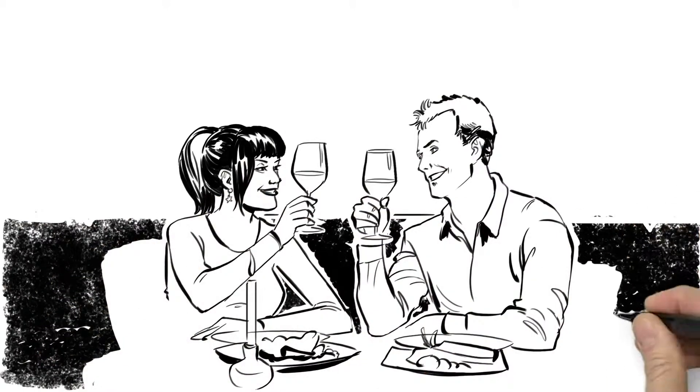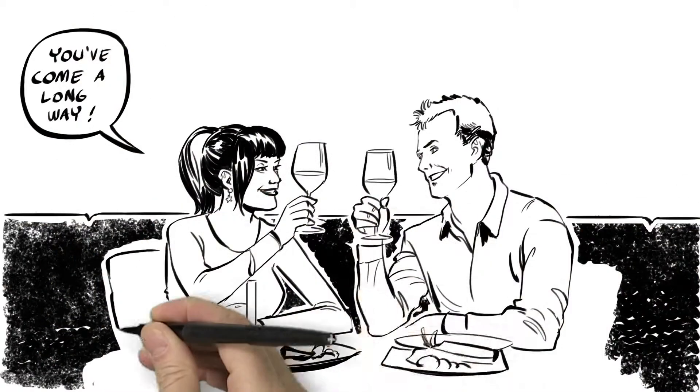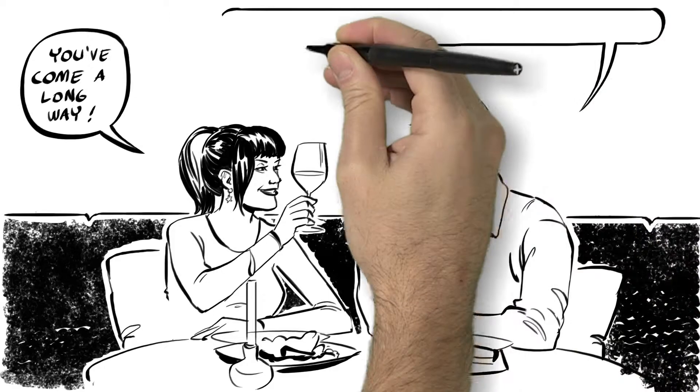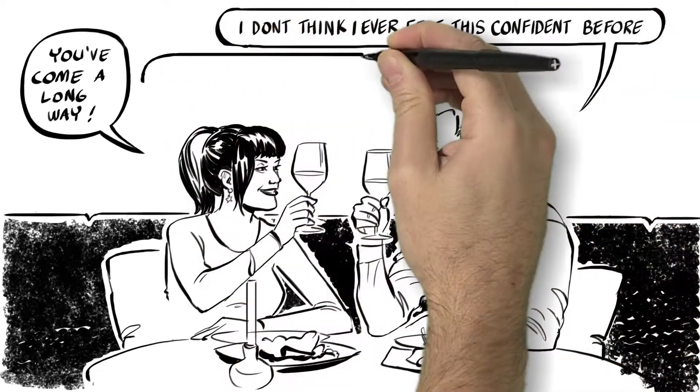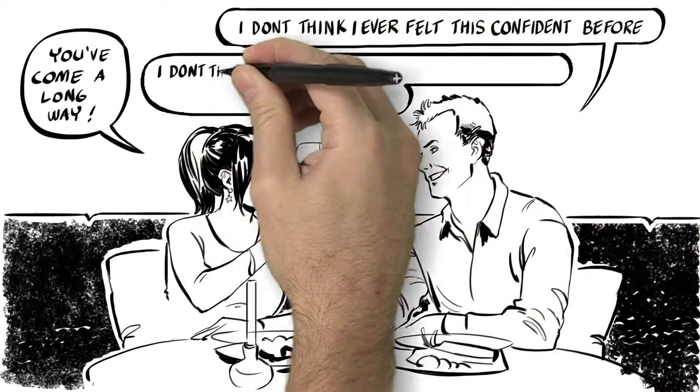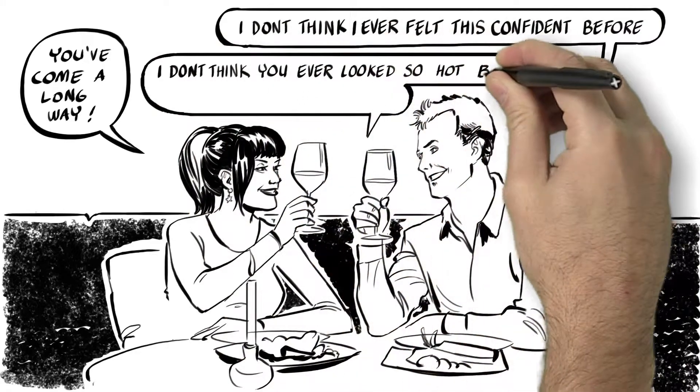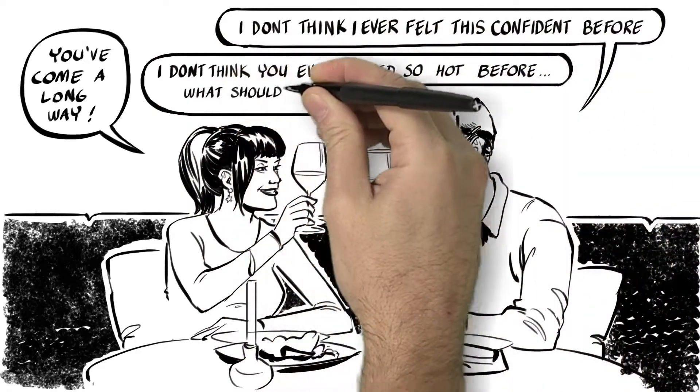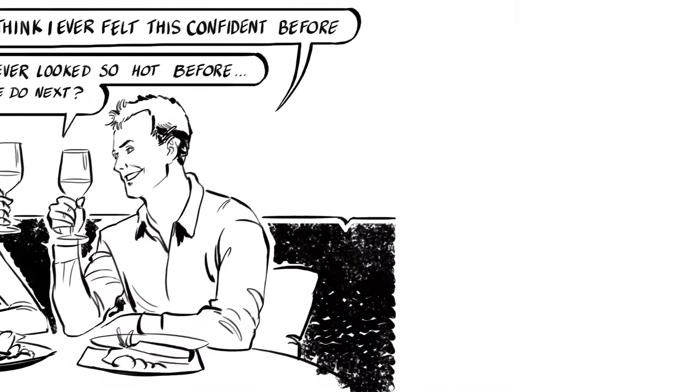Jenny said, nice moves back there. You've come a long way. Blake said, I don't think I've ever felt this confident before. And Jenny responded, I don't think you've ever looked so hot before. What should we do next?